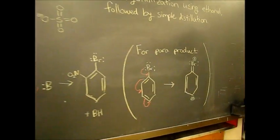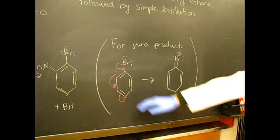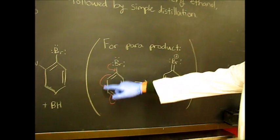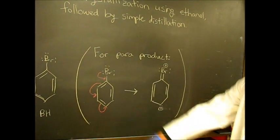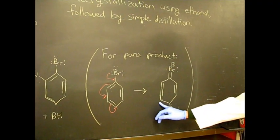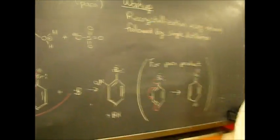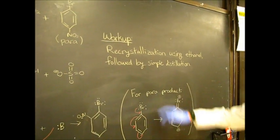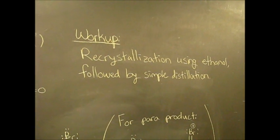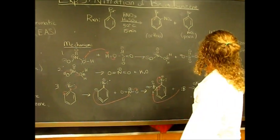For the para product, it's the same general reaction. It's just the anion that gets formed is a little bit different. Instead of the electrons coming here, you'll skip a step and form the electrons at the para position. This doesn't occur at the meta position—bromine is just ortho-para-directing, not meta. And then finally for workup, we'll do recrystallization with ethanol and then simple distillation. So let's start the reaction.